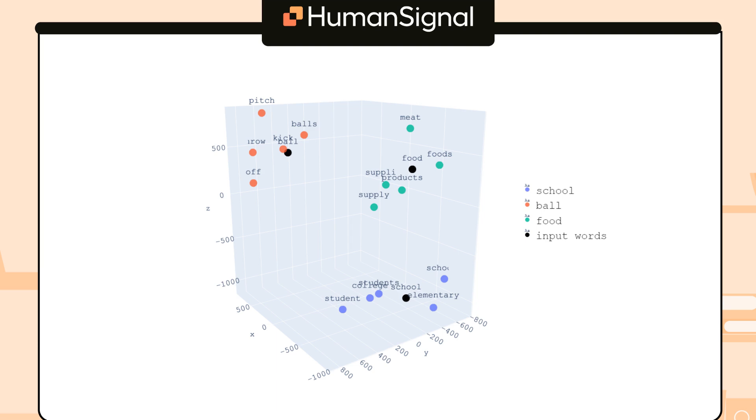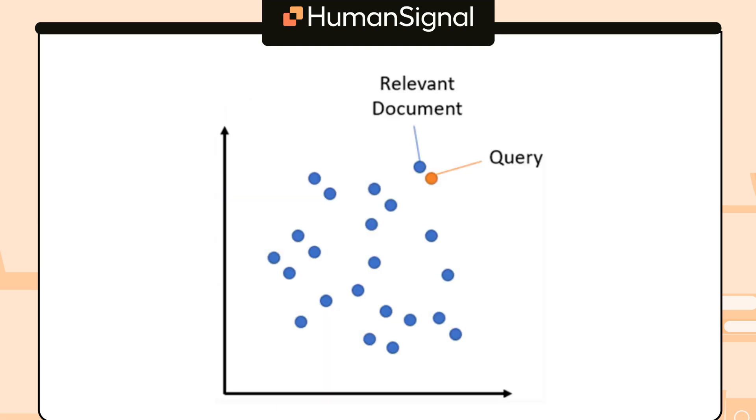Essentially, text that means similar things will have similar embeddings. In the case of RAG, this means that the embeddings for a given query will have a similar embedding to the documents that contain the answer to that query, because they all mean similar things.